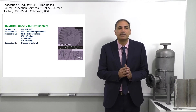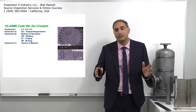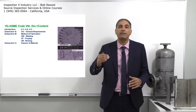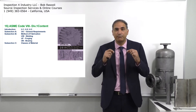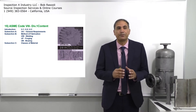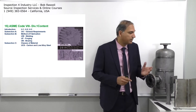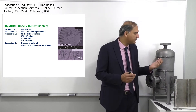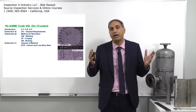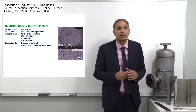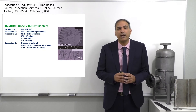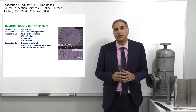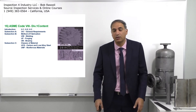Subsection C covers the classes of materials. Subsections A and B are general and applicable for all pressure vessels with any material. Now there are additional requirements based on material. UCS covers carbon and low alloy steel — like SA-516 Grade 70, a very common pressure vessel material. UNF covers non-ferrous materials such as nickel alloy and hastelloy alloys.